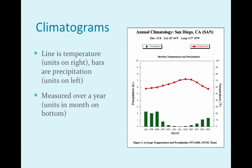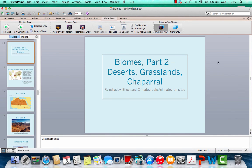I misspoke earlier in this video — the layers of the forest you should have gotten from the first biome video. If you didn't, go back; it's part of the rainforest section. Make sure you get those: the floor, the understory, the canopy, and the emergent layer, because those are not in your book. And you're done.